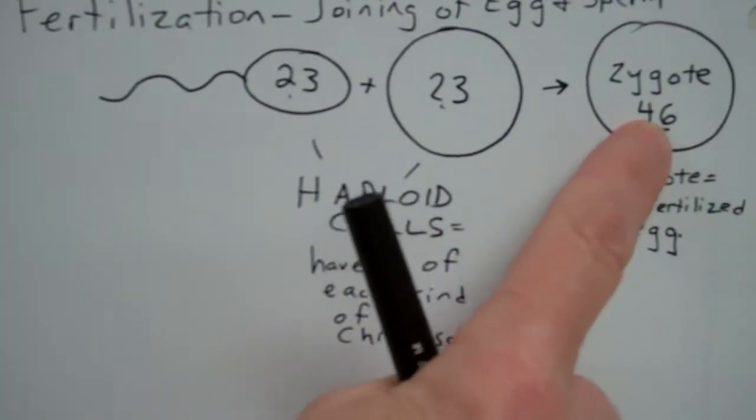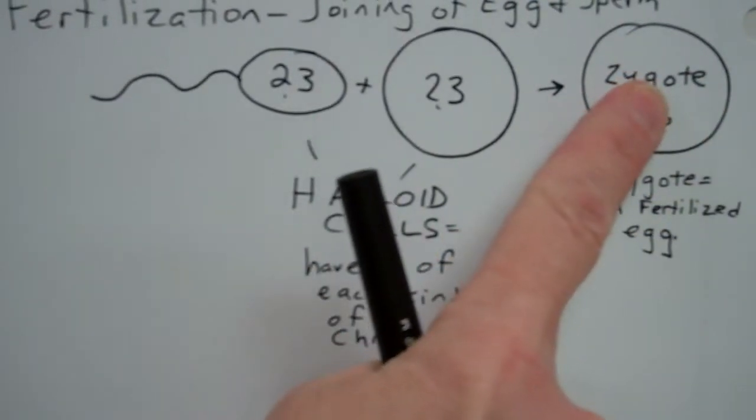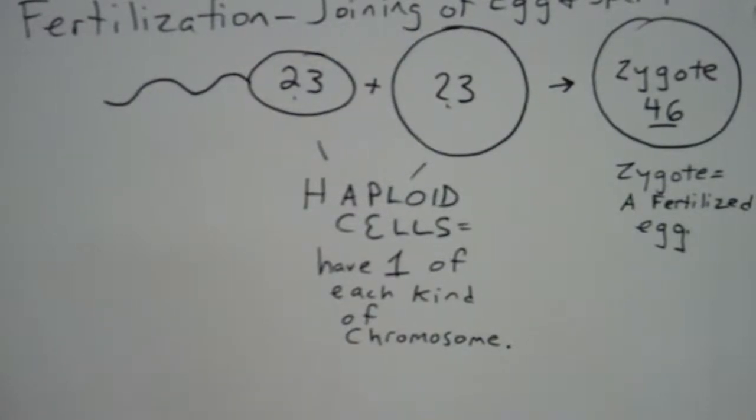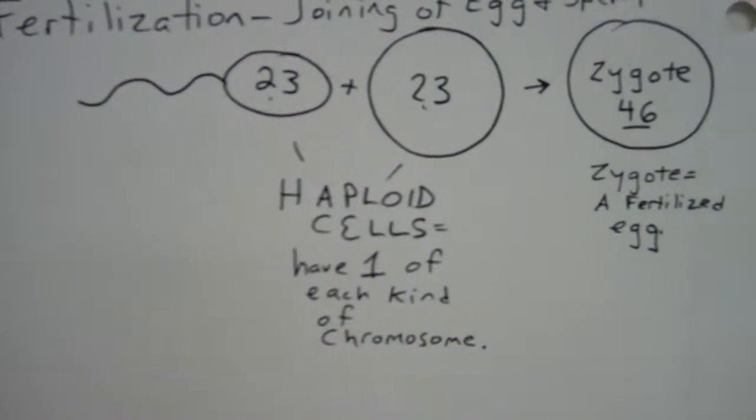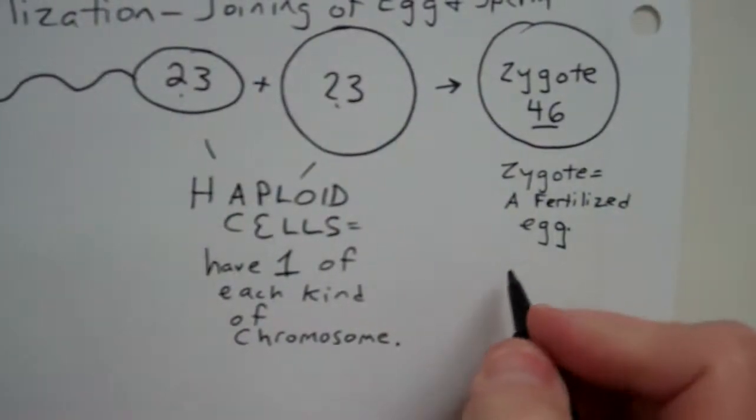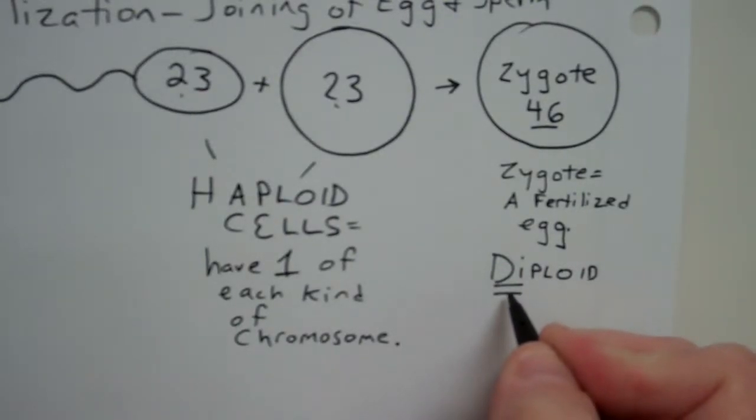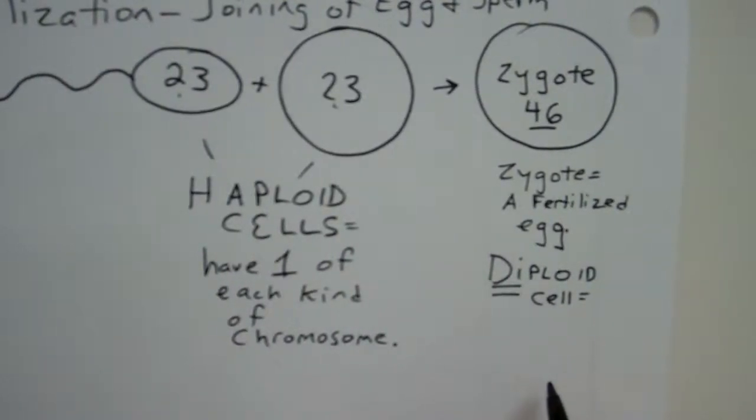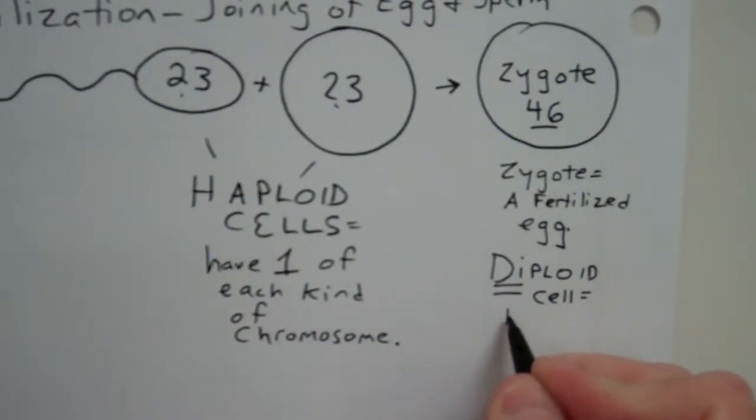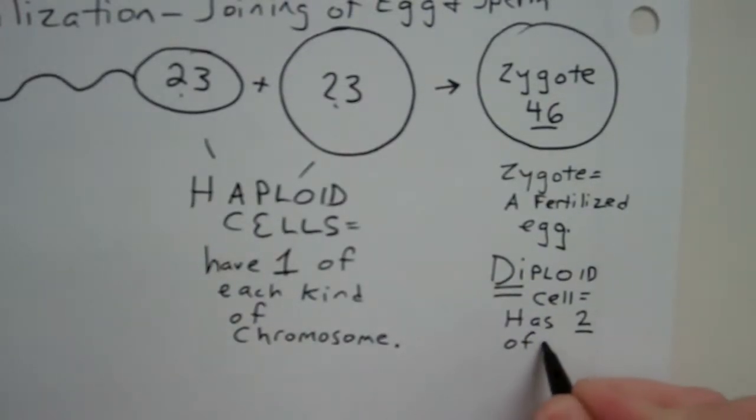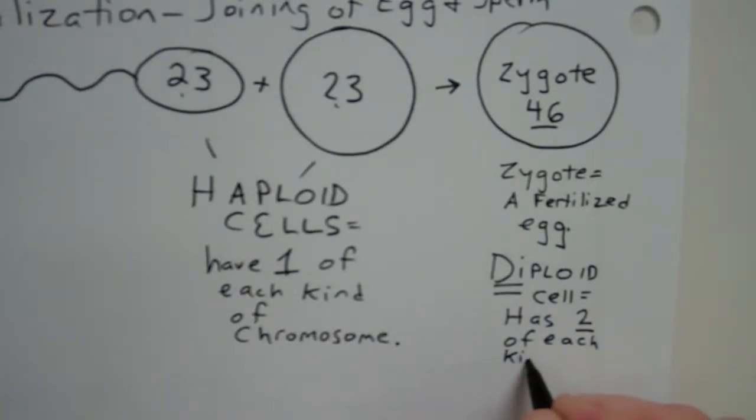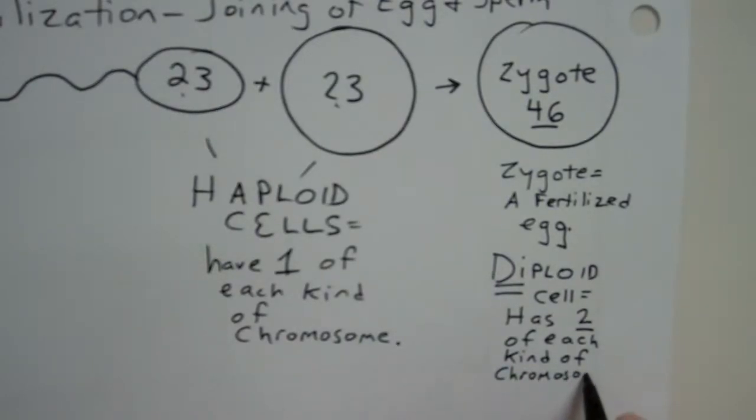However, when the chromosomes join in the zygote, you will find pairs of chromosomes. And so that is why we call the zygote a diploid cell. Di. Think about di. Two. So in a diploid cell, this is a cell that has two of each kind of chromosome.